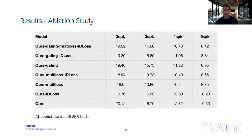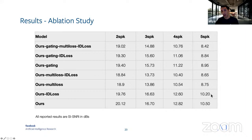We also run an ablation analysis to understand the contribution of each part of the model. The complete model is shown in the last row. If we remove the ID loss, we can see a small degradation — for four and five speakers, about 0.3 dB. But if we remove the multi-loss, we get a greater degradation in performance — for five speakers, a degradation of almost over 1 dB.